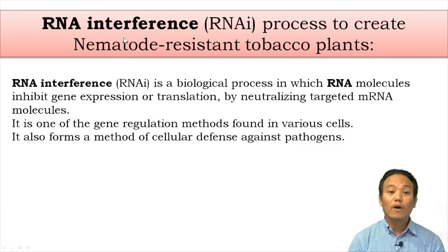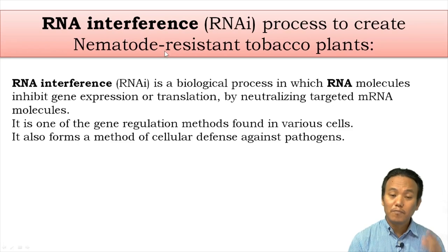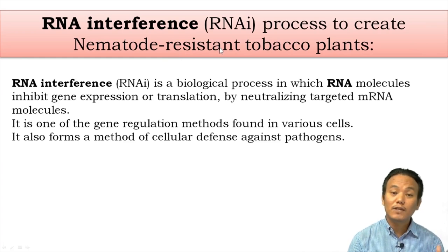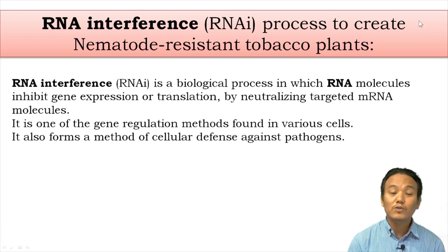Next is the use of the RNA interference process to create nematode-resistant tobacco plants. Nematodes are roundworms — some are plant parasites. Roundworm infestation of crop plants can cause significant reduction in yield, especially in tobacco plants, and nematode infestation can incur huge financial loss to tobacco farmers. Therefore, the RNA interference process is used to create nematode-resistant tobacco plants.